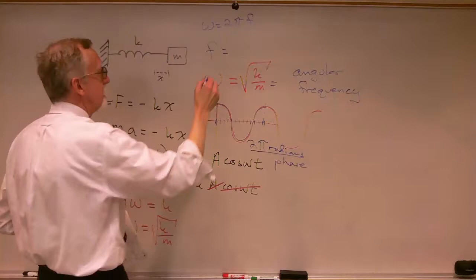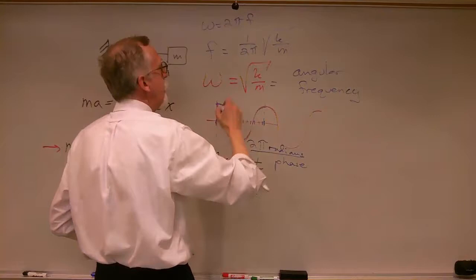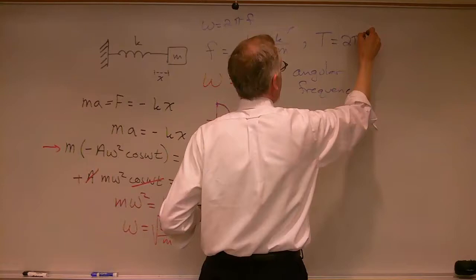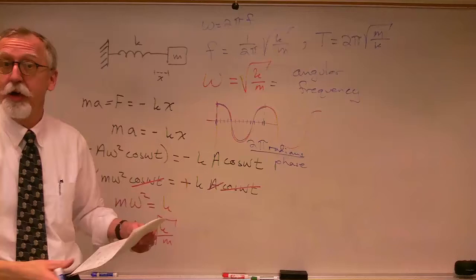We can write the frequency of the simple harmonic oscillator as one over two pi times the square root of k over m. And since the period is one over the frequency, we can write the period as two pi times the square root of m over k.